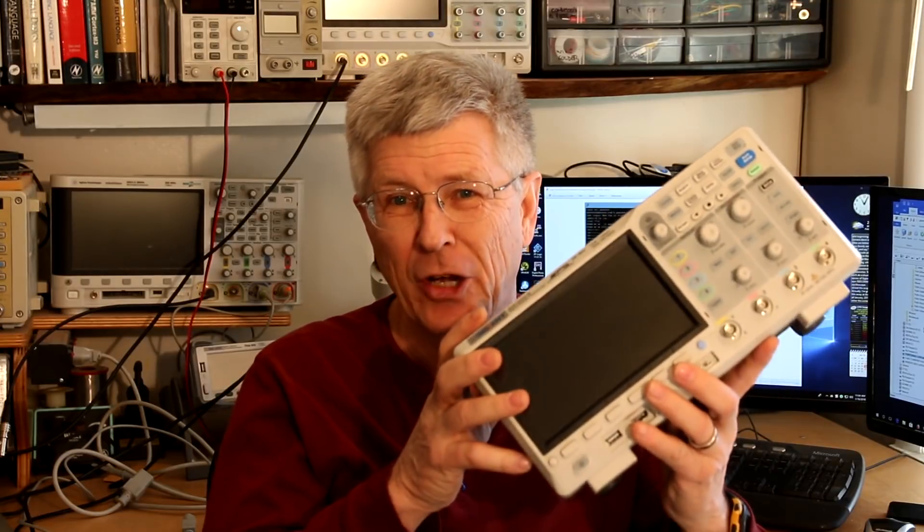Back around 1972 or so, I convinced my boss to buy a fancy Tektronix high-performance oscilloscope. We paid, as I recall, about $20,000 for it, which in today's money is something like $100,000. And it had about the same performance as this model, which is just a tiny fraction of the price.